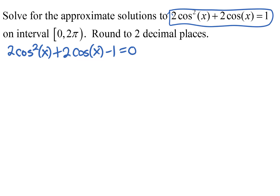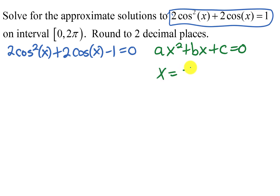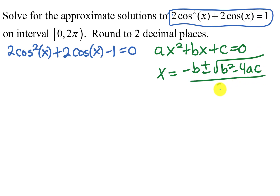What do we do in algebra when a quadratic equation doesn't factor? A quadratic equation has the form ax squared plus bx plus c equals 0, and we use the quadratic formula: x equals negative b plus or minus the square root of b squared minus 4ac, all over 2a.